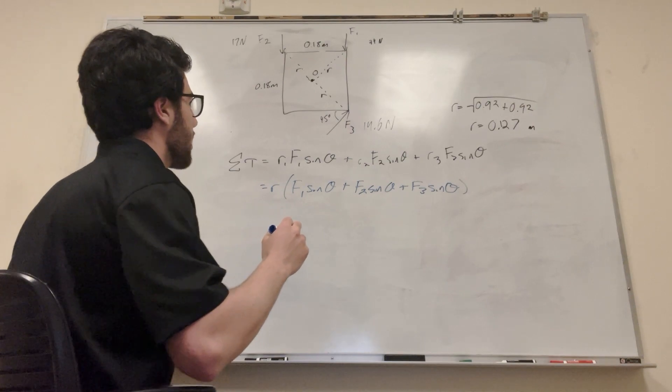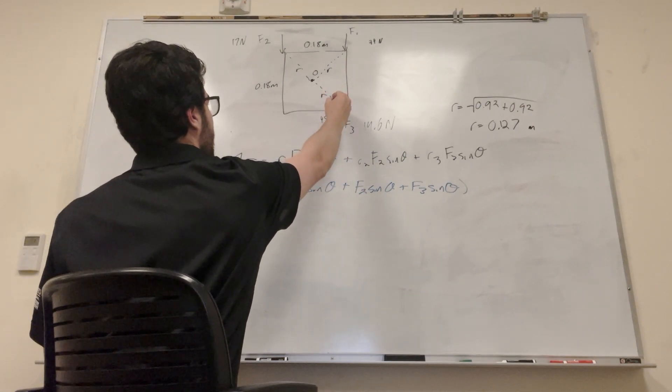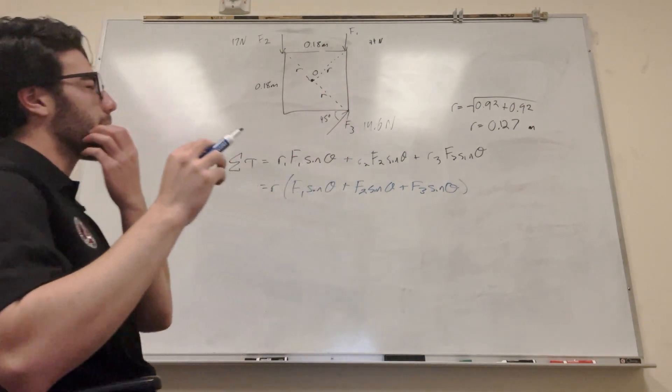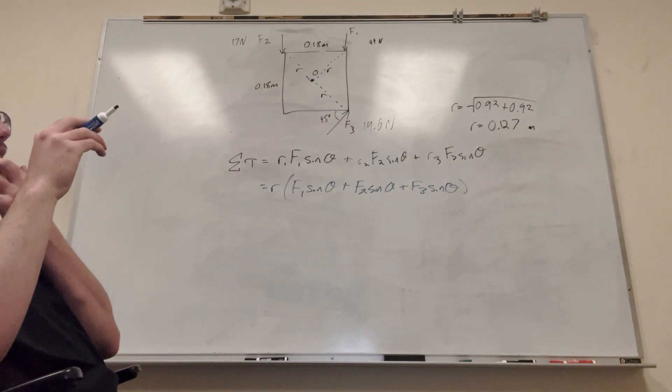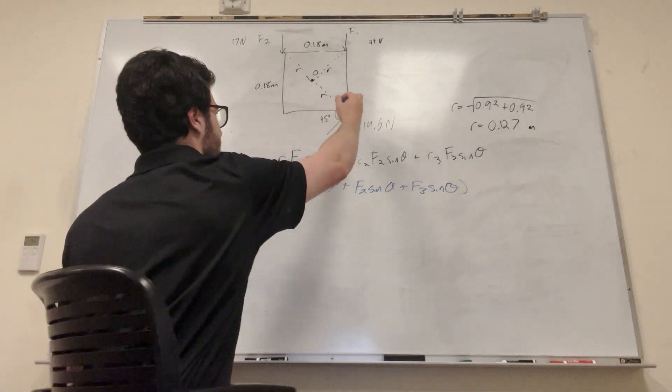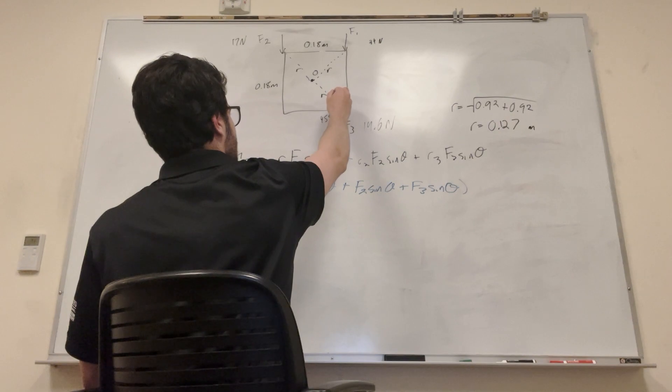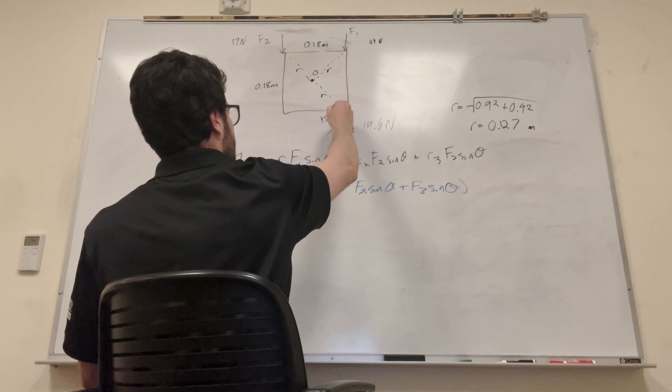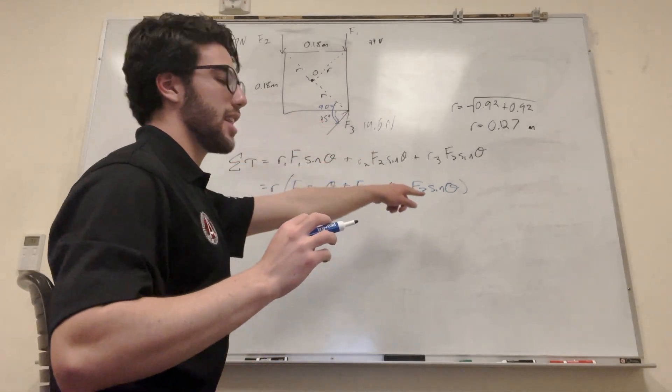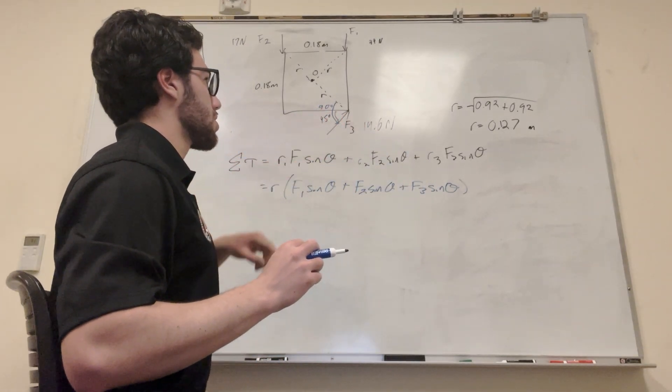So now we need to find these thetas because we know the force and we just need to find the thetas. So the theta is, you're going to take this side. How do I put this? So you're going like the most counterclockwise, so it's not going to be this side, it's gonna be this side and you're just going to draw a line, right? That's 90 degrees. So that's going to be the theta that we're going to use.